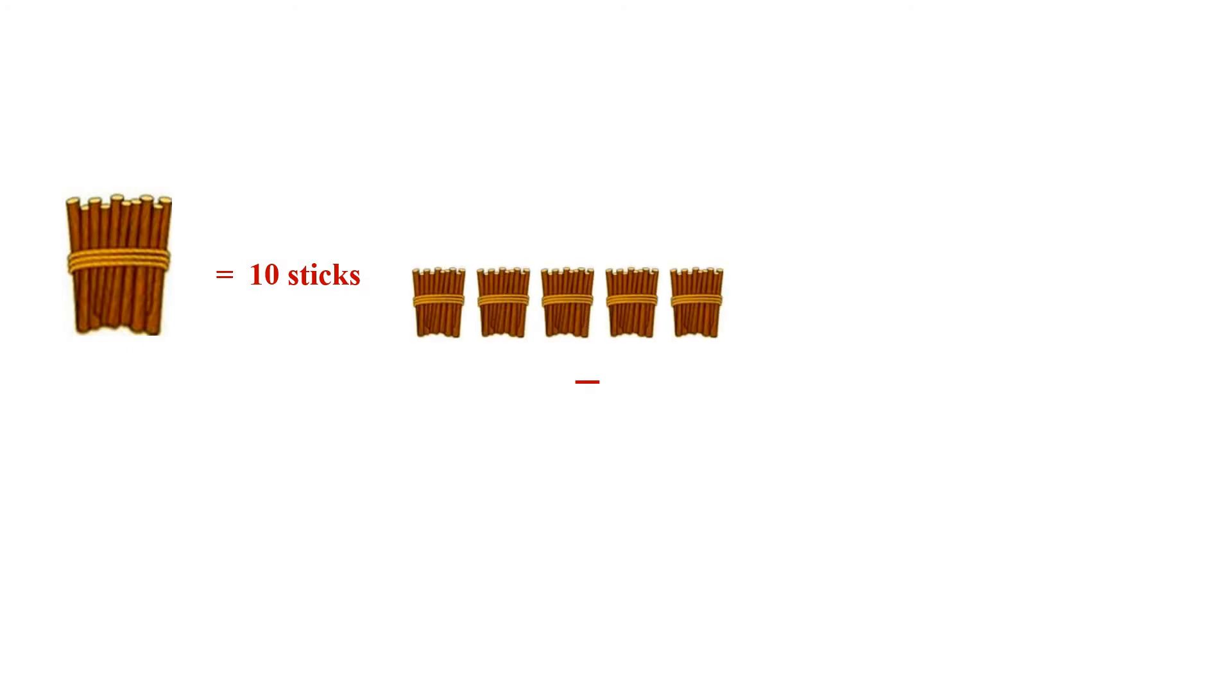So if there are five bundles, we will write it as five tens minus three bundles of sticks, means three tens. In answer, we get five tens minus three tens is equal to two tens.